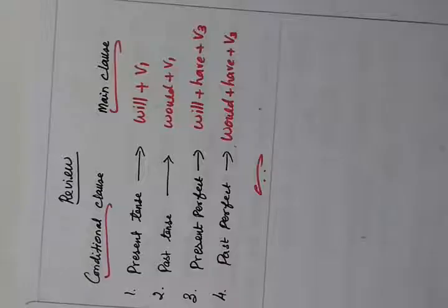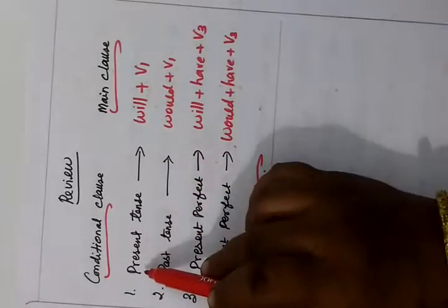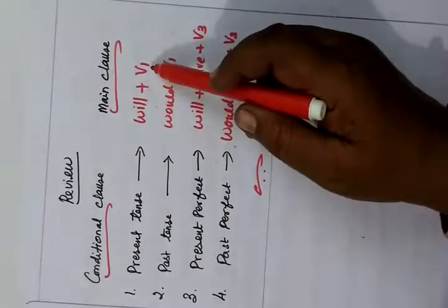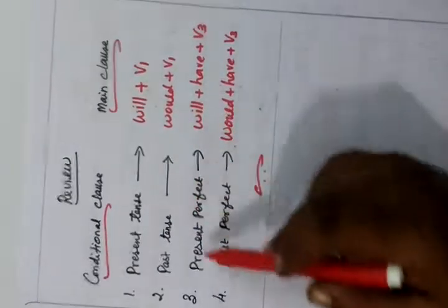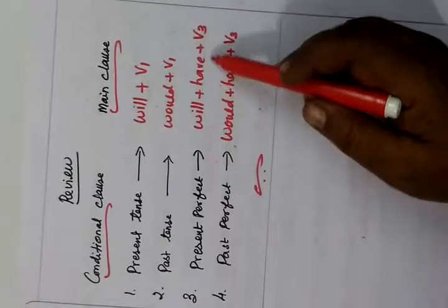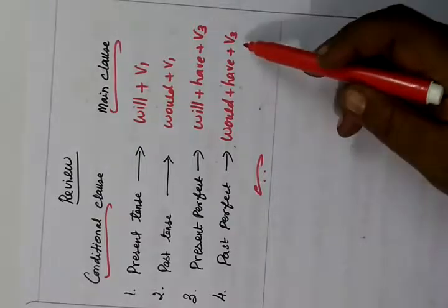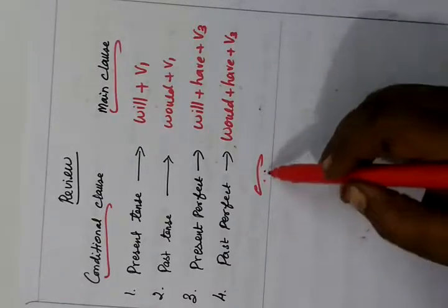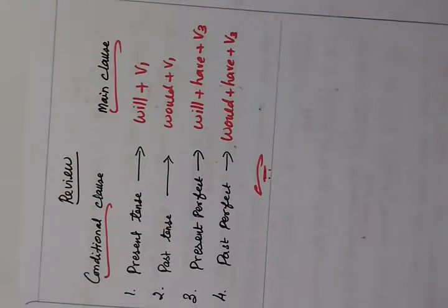Finally, in the conditional clause and main clause: present tense → will + verb 1; past tense → would; present perfect → will + have + V3; past perfect → would + have + V3. This is a very easy topic and everyone can attend this. Thank you.